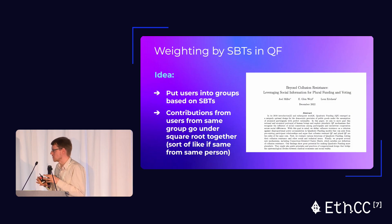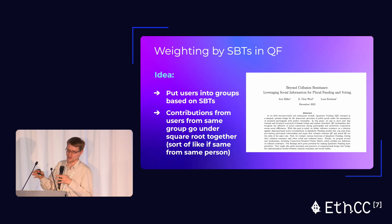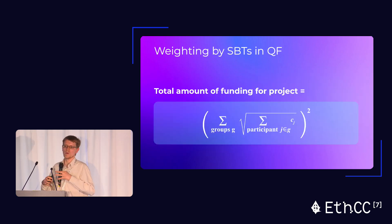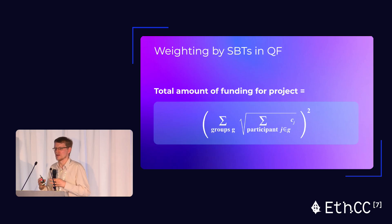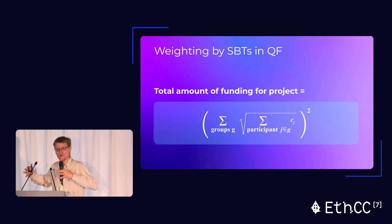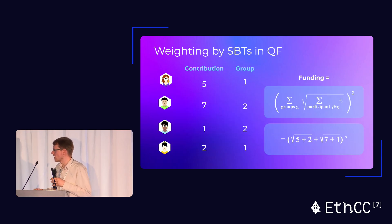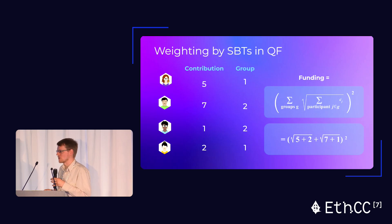You put users into groups based on their social history, and then contributions from the same group go under the square root together, in the same way that individual contributions went under square roots in standard quadratic funding. Before, you wanted to give more weight to individual contributions versus having a whale contribute. With Soulbound weighting, people who have the same Soulbound Tokens look similar — they have a monolithic point of view. So you take people with the same Soulbound Tokens, put them together and treat them as one individual, then do quadratic funding accordingly. With our example of two groups, you wind up with two square roots.